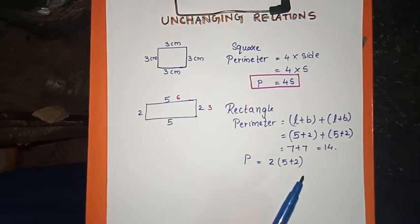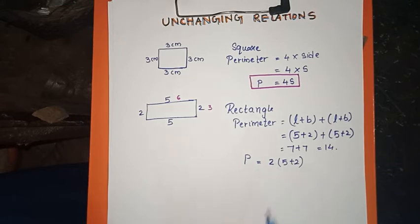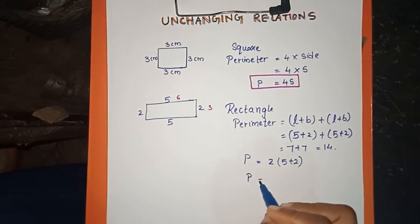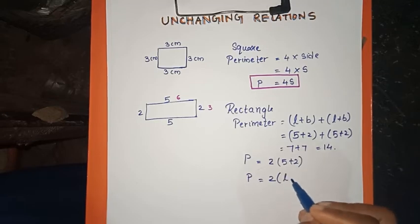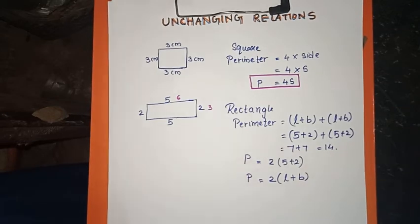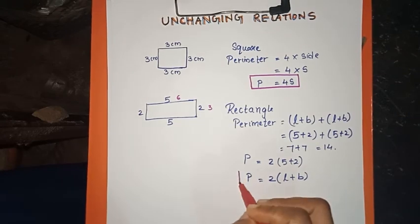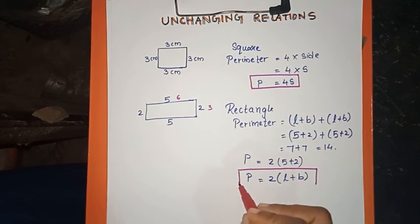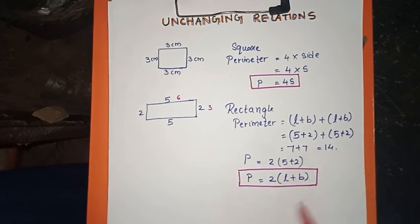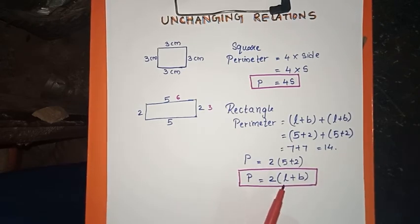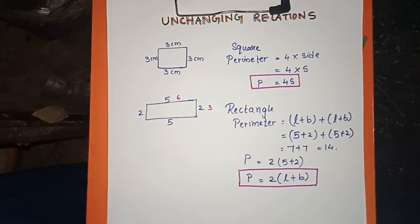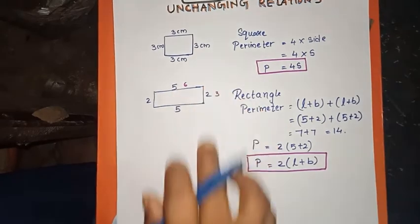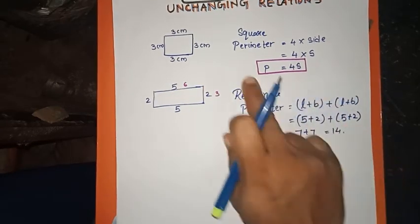So, the perimeter P is equal to 2 into (L plus B). Here, 'into' means multiplication and the bracket indicates grouping. We will now write a polynomial equation: P is equal to 2 into L plus B.